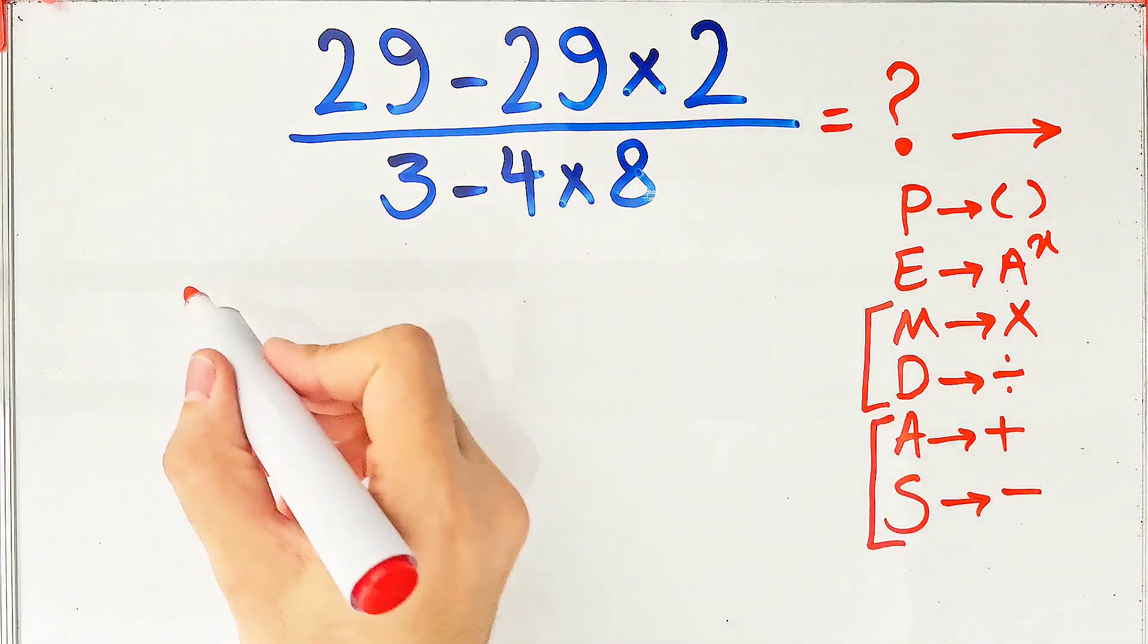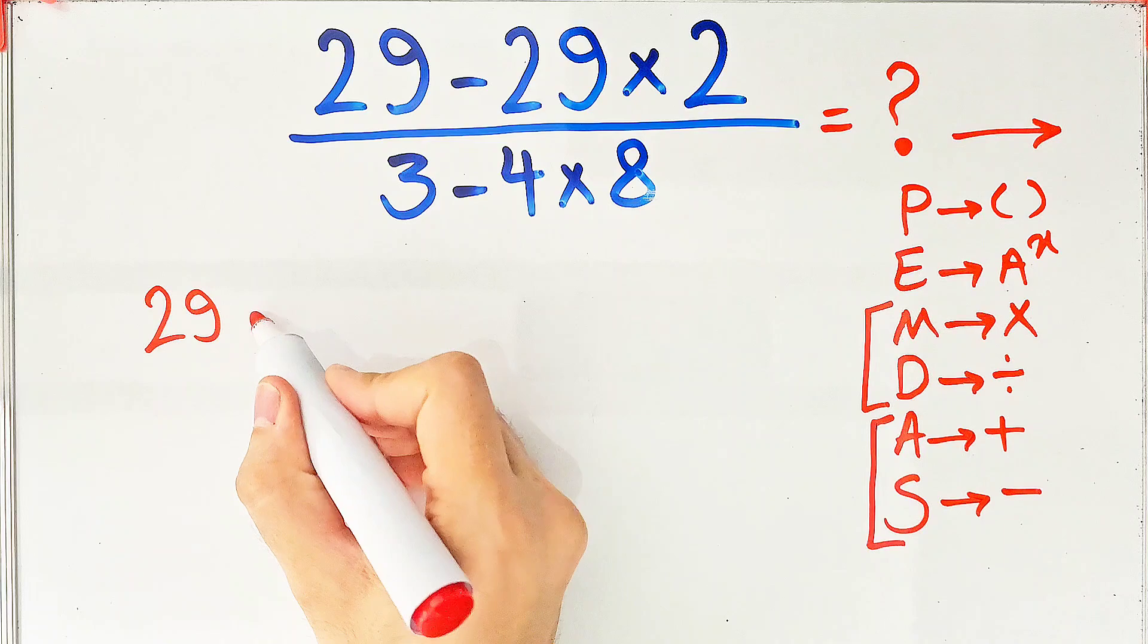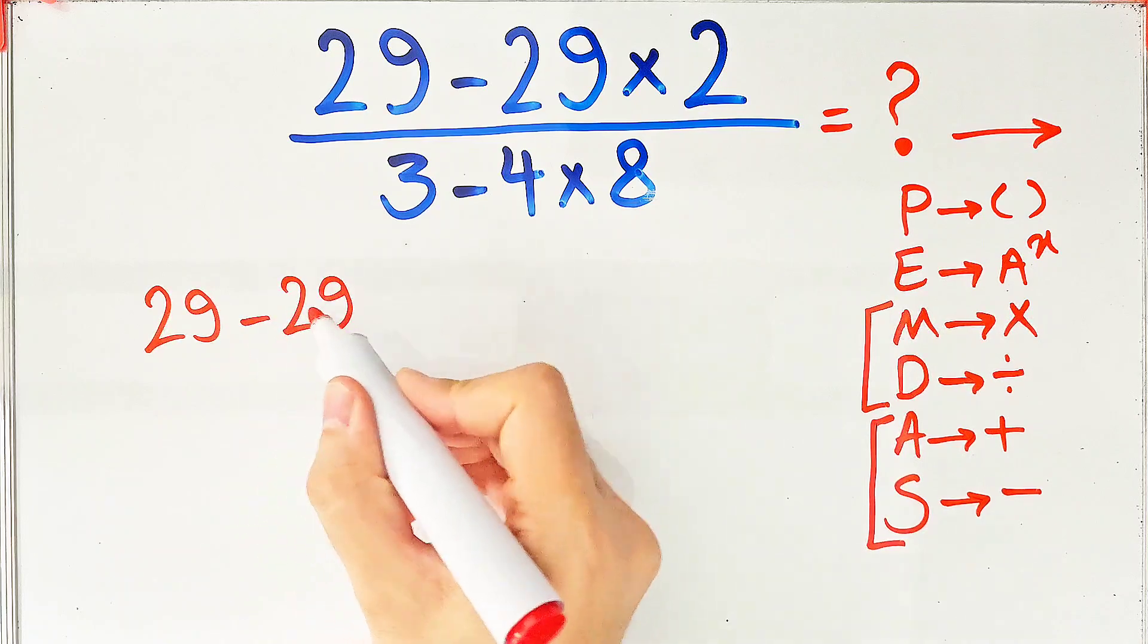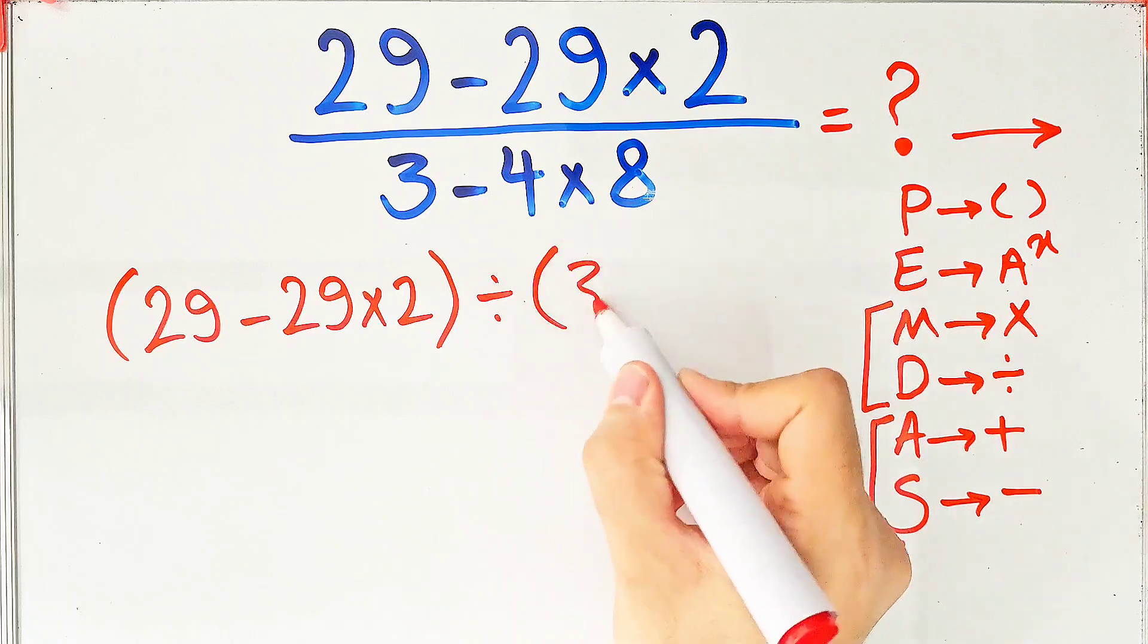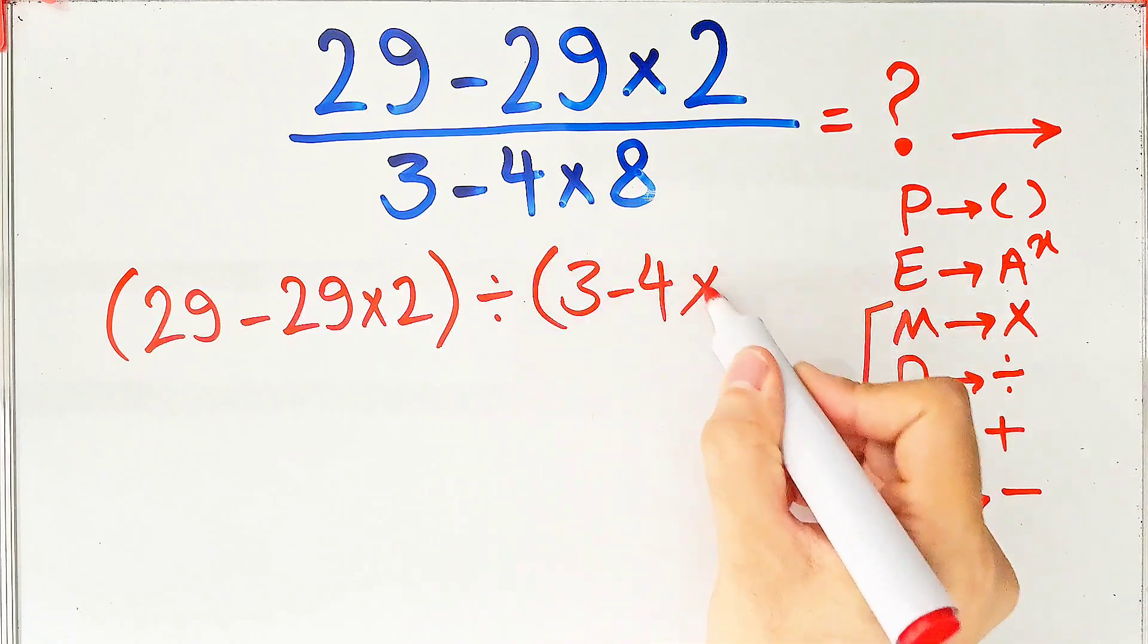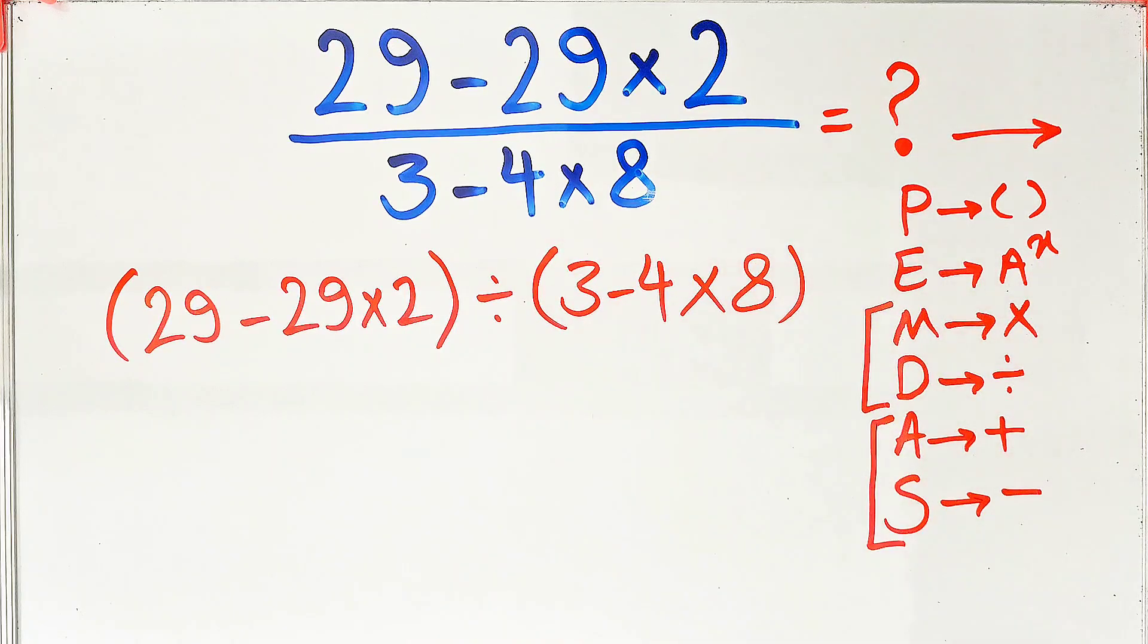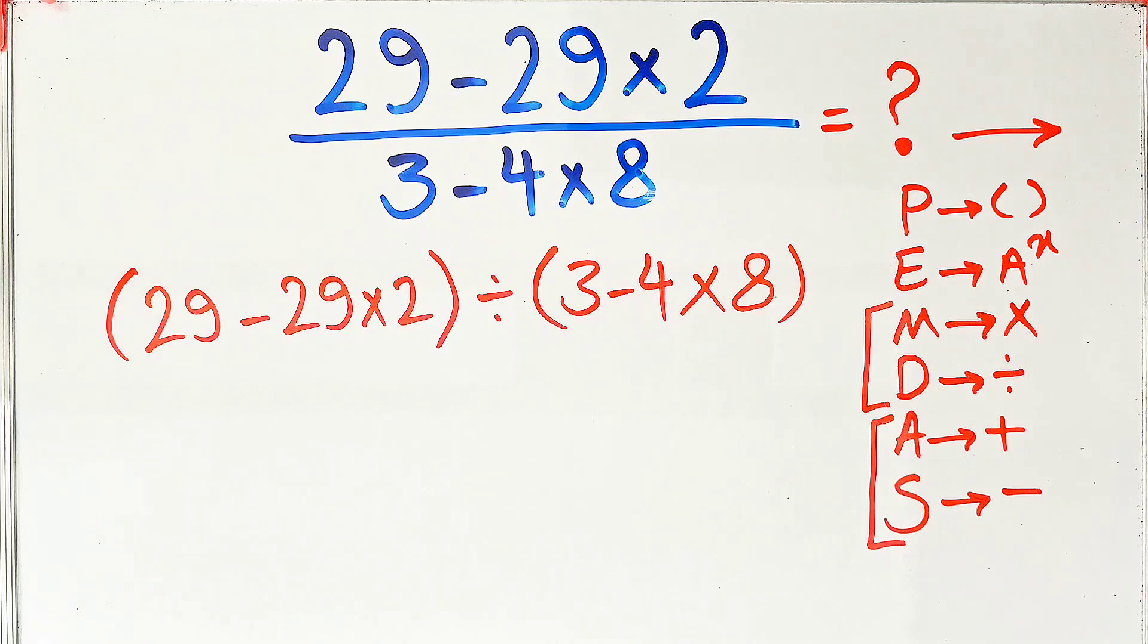First, we simplify this expression. We have 29 minus 29 times 2, then divided by 3 minus 4 times 8. According to the PEMDAS rule, first we simplify the parentheses.